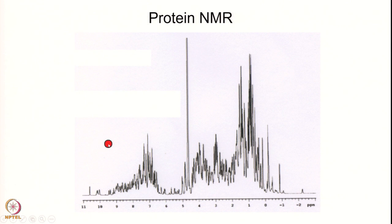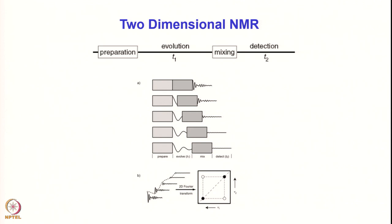This is where the revolution occurred: instead of one frequency dimension, you try to spread this information across two different axes — why not generate two frequency dimensions and establish correlations between the various signals in a two-dimensional way? That was the motivation. This fantastic idea was put forward by Jean Jeener from Belgium and later picked up by Richard Ernst from Zurich, and it caused a huge explosion in the applications of NMR in chemistry and biology.